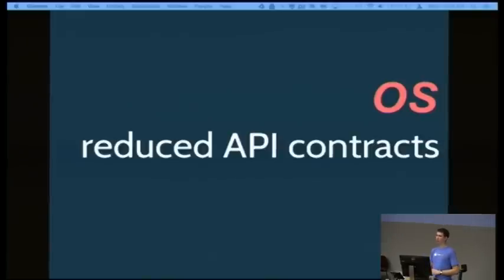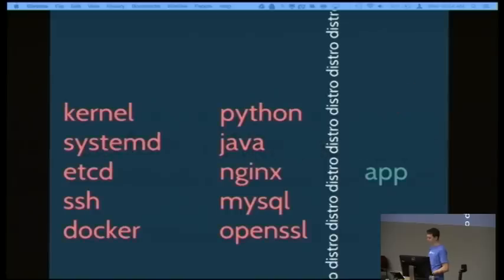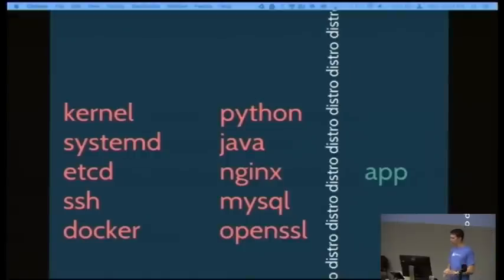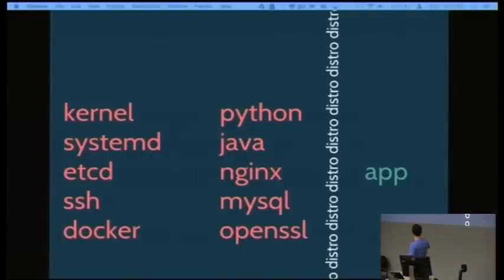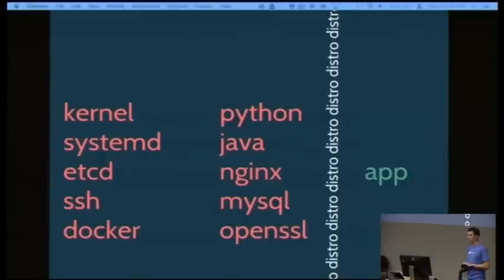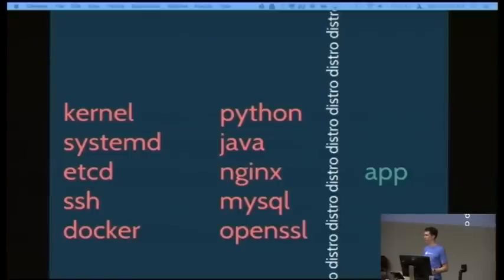Now that we've separated the application from the operating system, we're able to do something interesting with the OS. We're able to reduce the API contracts the operating system needs to maintain. By show of hands — how many people love complex, large, interdependent APIs? What we've kind of forced our Linux distros to do since the beginning is give us a very complex set of APIs, so our application relies on things like a Python runtime, a Java runtime, nginx, our database server, our TLS implementation, and our kernel.